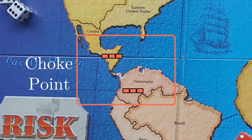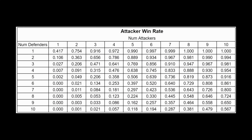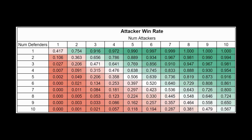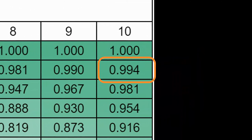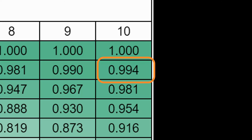I ran 100 scenarios, comparing everything from 1 attacker vs 1 defender to 10 attackers vs 10 defenders. The attacks continued until either the attacker or defender was wiped out. For this I actually did use a random number simulation — I ran a million runs for each grid square. The percentages show how frequently the attacker wins. For instance, 10 attackers vs 2 defenders results in an attacker win rate of 99.4%, and the plucky defenders would only win 6 times in 1,000.